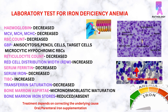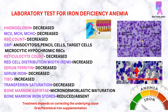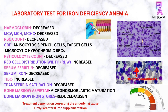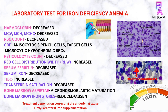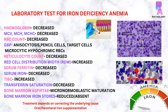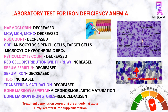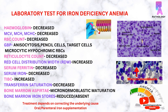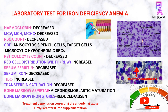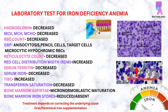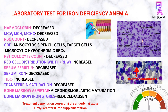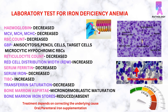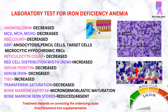The general blood picture shows presence of anisocytosis, microcytic hypochromic RBCs, pencil cells, and few target cells. The bone marrow aspirate shows erythroid hyperplasia and micronormoblastic maturation, and bone marrow iron is reduced or absent. There is decreased serum iron and serum ferritin levels, increased total iron binding capacity, and decreased transferrin saturation.